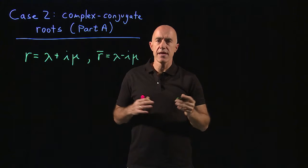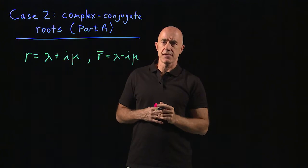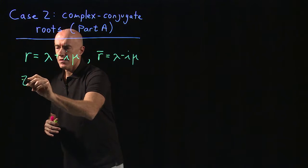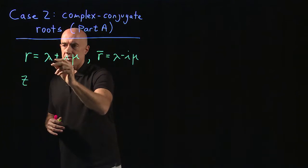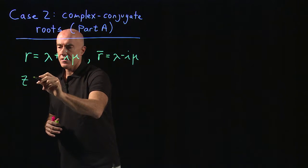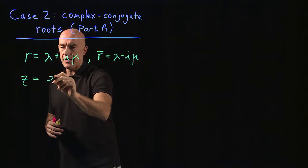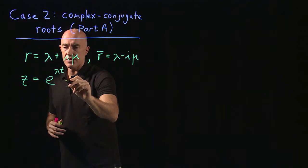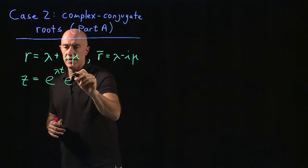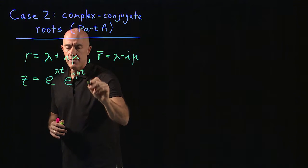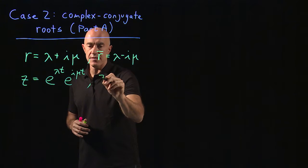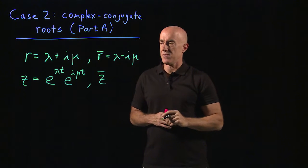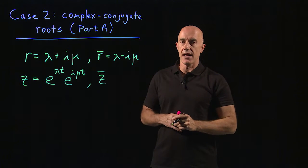Now we have two complex exponential functions. We have z, which is e to the rt, so that's e to the lambda t times e to the i mu t. And then we have z-bar, which is e to the lambda t times e to the minus i mu t.